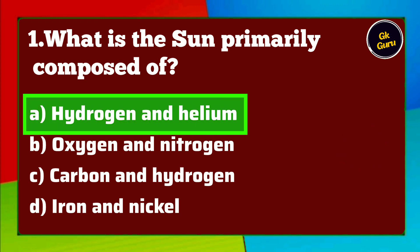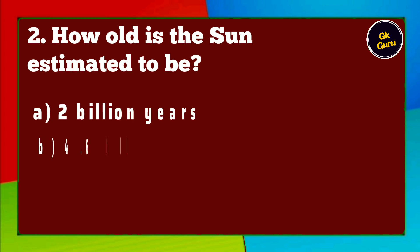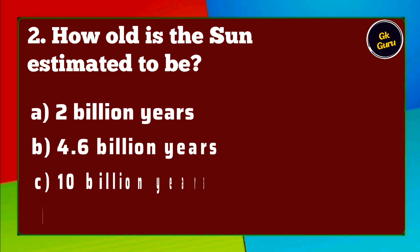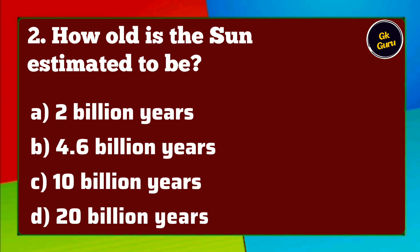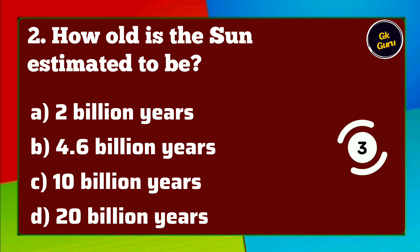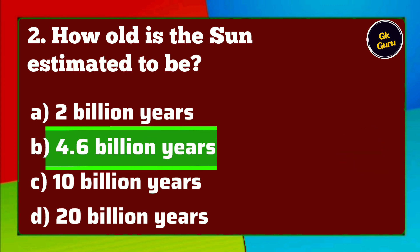How old is the sun estimated to be? A. 2 billion years B. 4.6 billion years C. 10 billion years D. 20 billion years. Answer B.